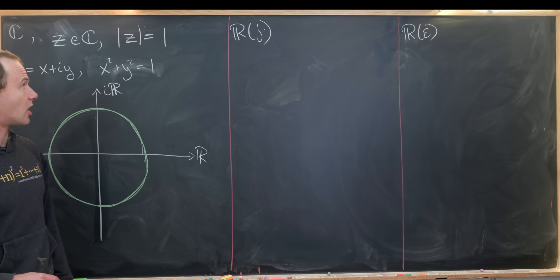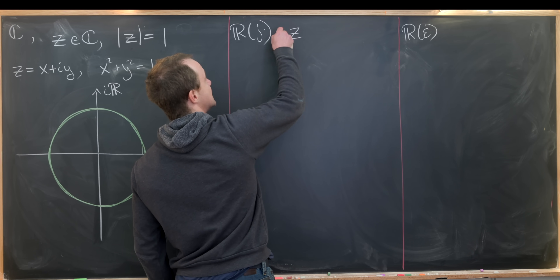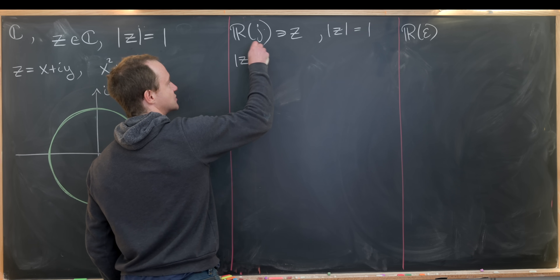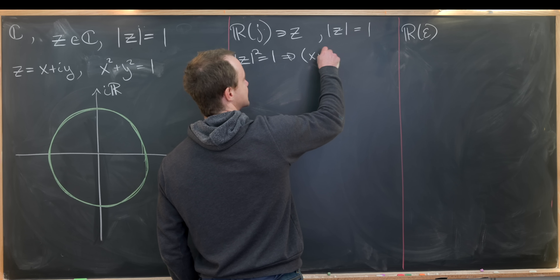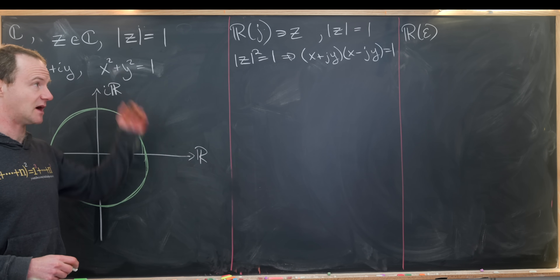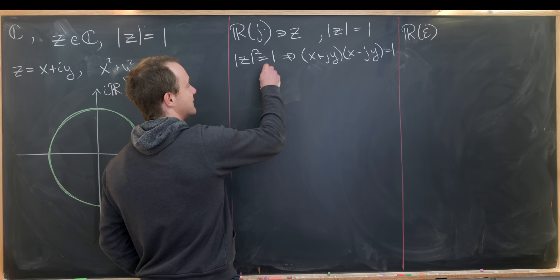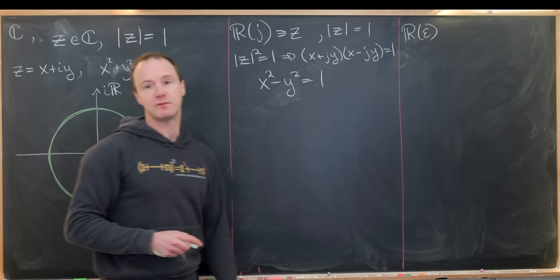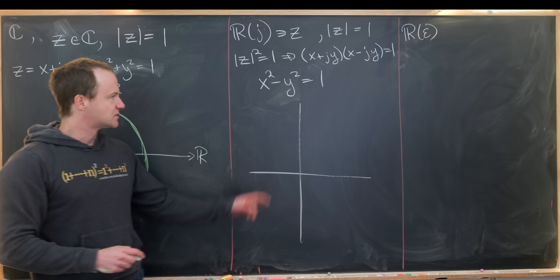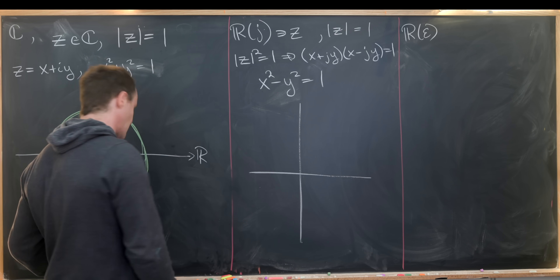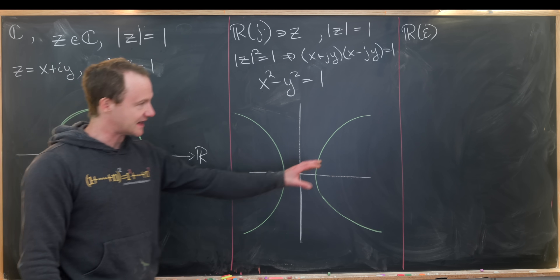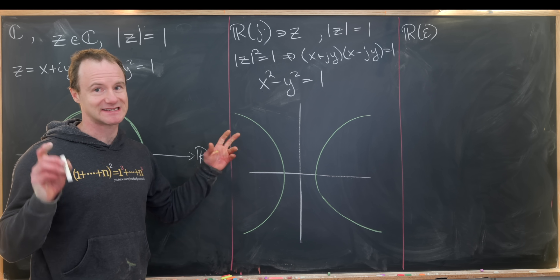Now let's look in R adjoined j. Taking a Z here, the modulus of Z equals one means the modulus squared equals one, which is (X + jY)(X − jY) = 1. Multiplying that out, since j² = 1, we get X² − Y² = 1. That's of course a hyperbola — it crosses the X-axis at (1, 0) but never crosses the Y-axis. So in the split complex plane, the analog of the unit circle is a standard hyperbola.